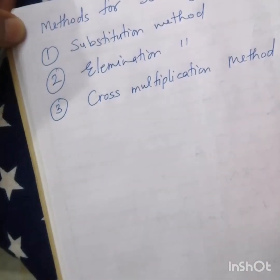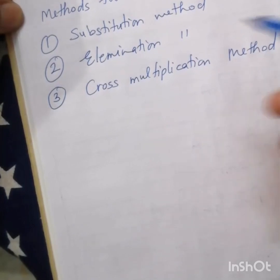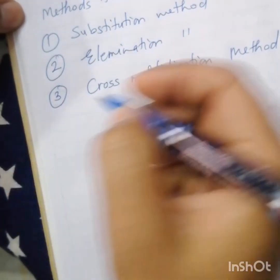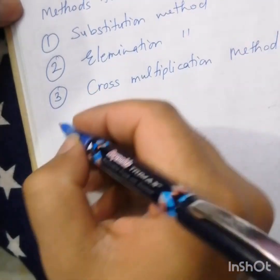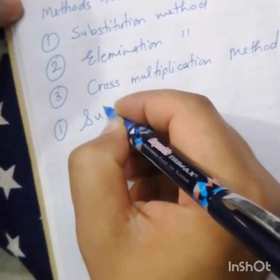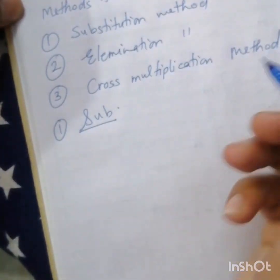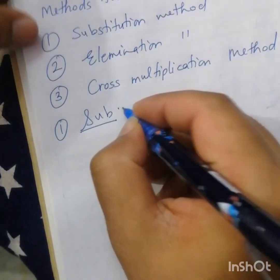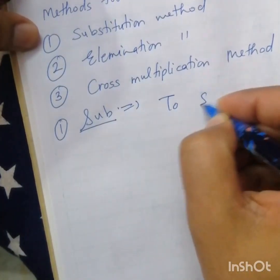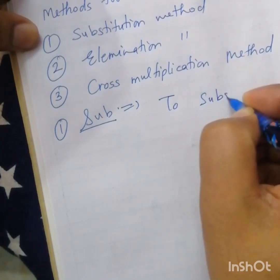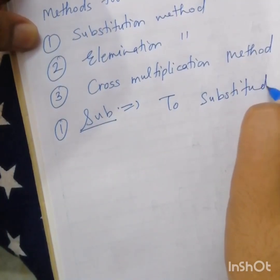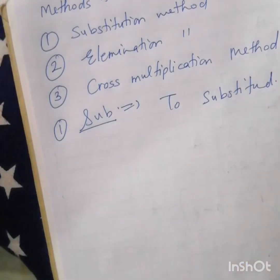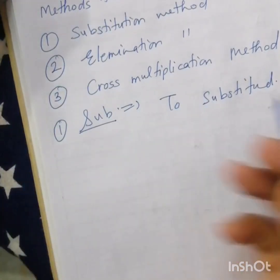Now we will solve particular equations by using these three methods. Firstly, substitution method — we will go one by one. Substitution means to substitute, meaning you have to find the value of one variable in terms of another.